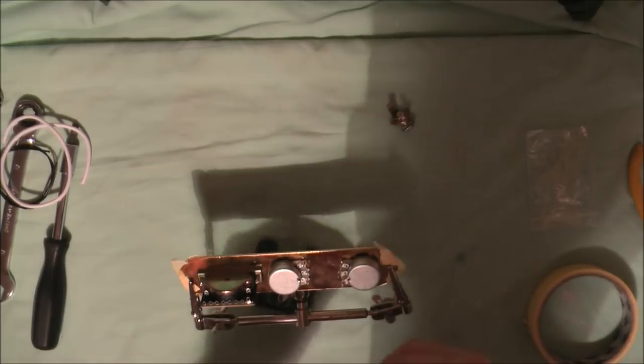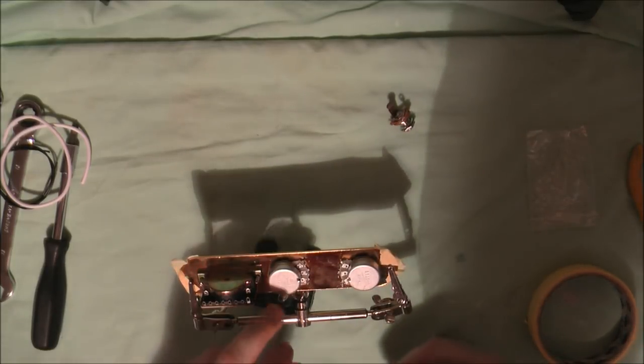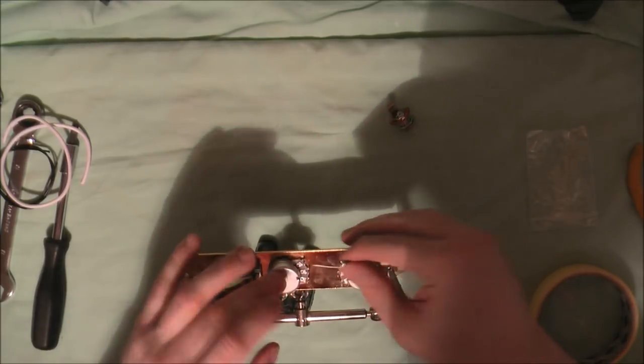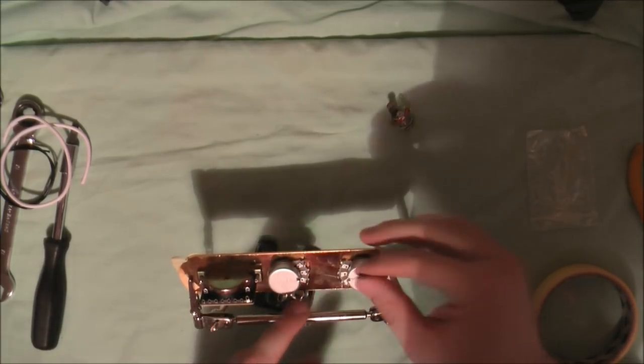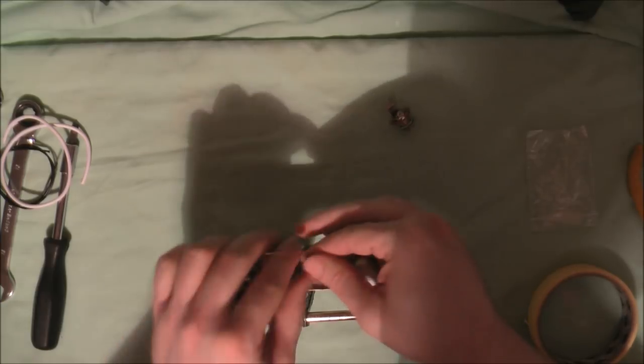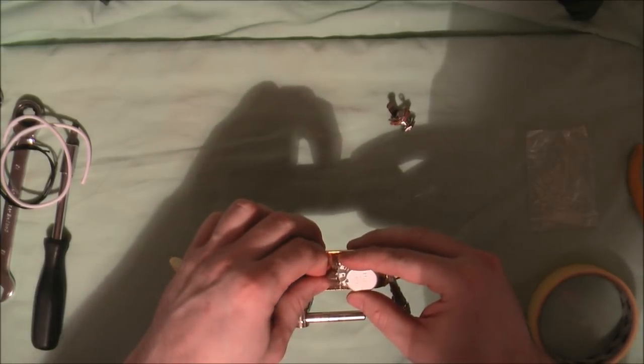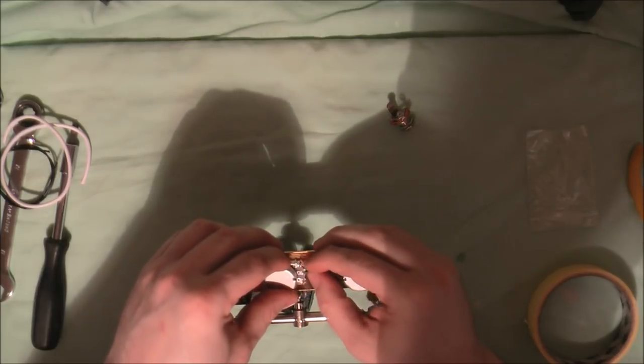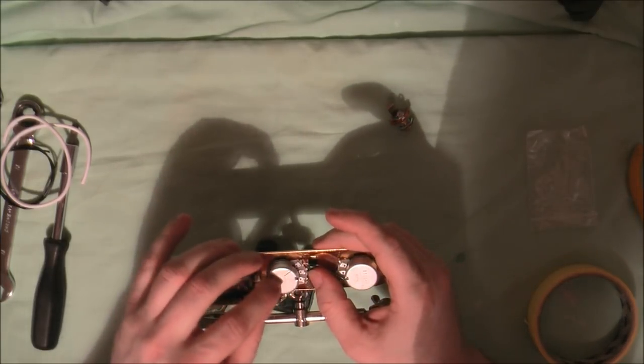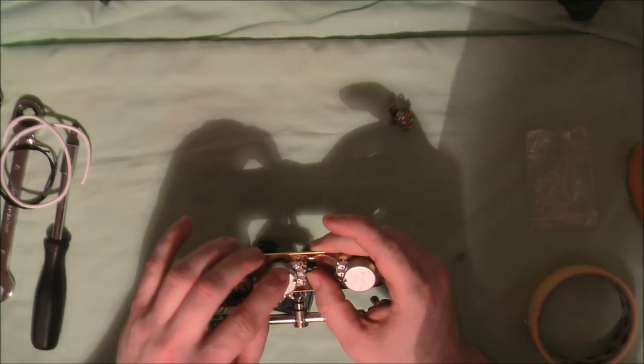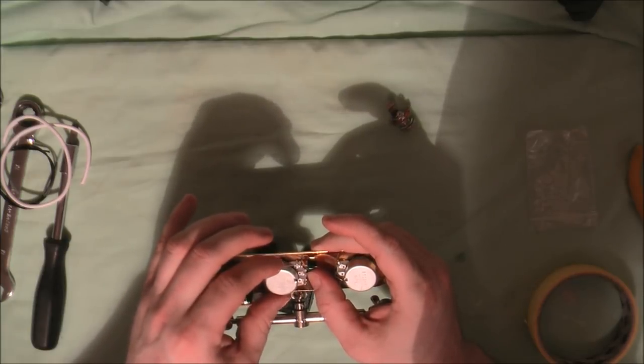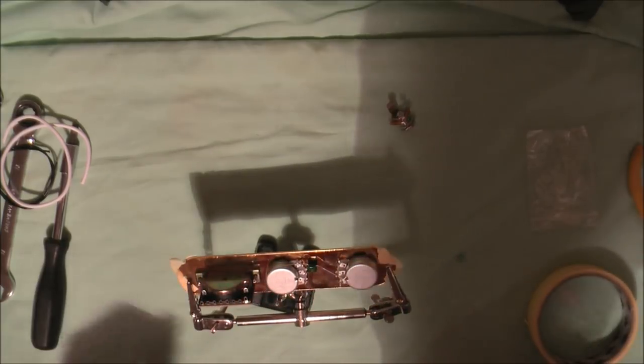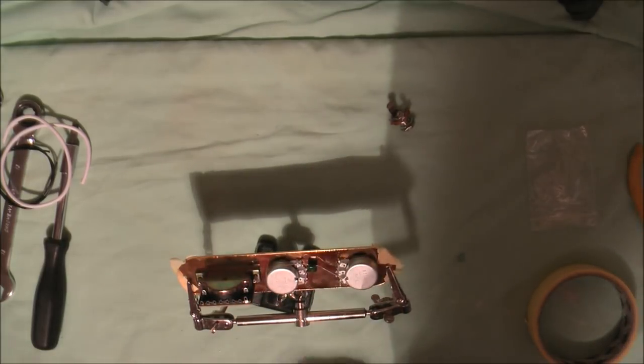Next thing I want to do is fit the capacitor. The capacitor is going to go from the top lug of the volume pot to the middle lug of the tone pot. Squeeze it in just like that, very simple, and I'm just going to make the edge touch the side of the pot just to earth that as well and we can start to solder.